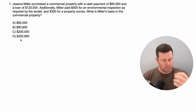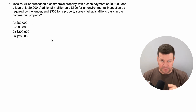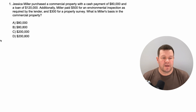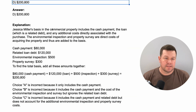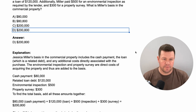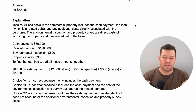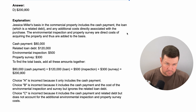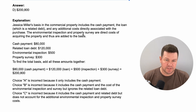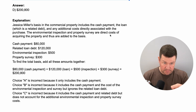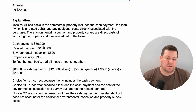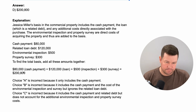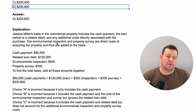Pause the video, reread this if you need to, and then press play when you're ready to see the explanation. The answer is D, $200,800. Jessica's basis in the commercial property includes the cash payment, the loan — which is debt taken on as part of the acquisition — and any additional costs directly associated with the purchase. The environmental inspection and property survey are direct costs of acquiring the property and are therefore added to the basis. So: $80,000 plus $120,000 equals $200,000, plus $800 gives us $200,800.